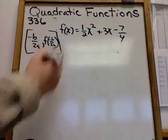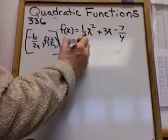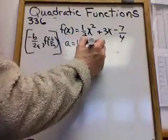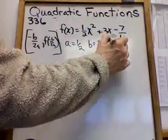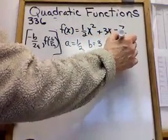I can't clear our fractions on this one, so I have to deal with them. So a is 1 half, b is 3, and c is negative 7 fourths.